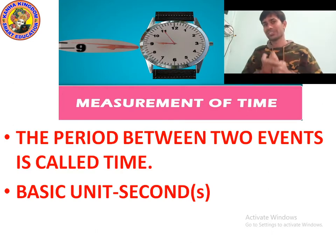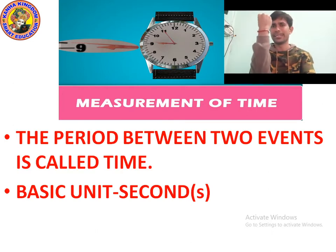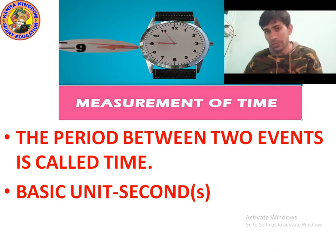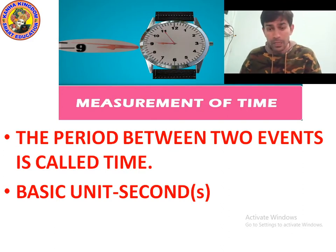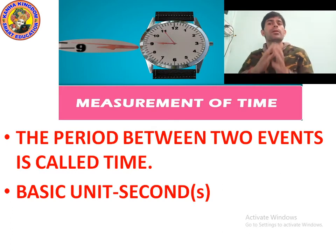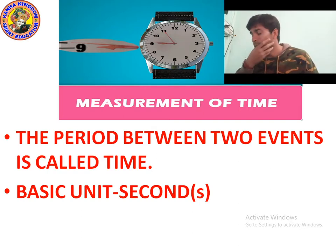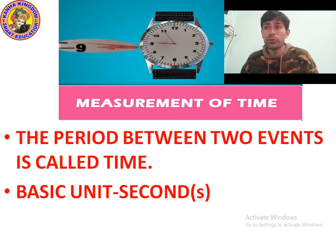We use a watch to tell time — there are different types: analog watch and digital watch. In ancient times, people used sundials and sand watches to find out the time. What is time? The period between two events is called time. The basic unit of time is second, and second is denoted by the small letter 's'.